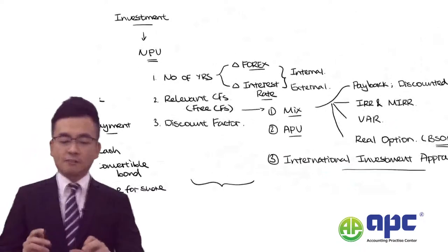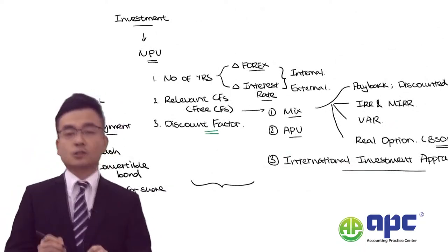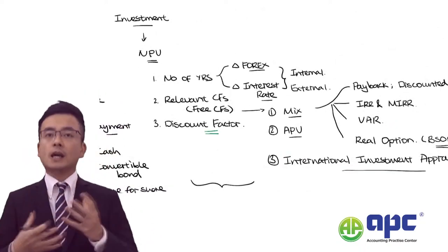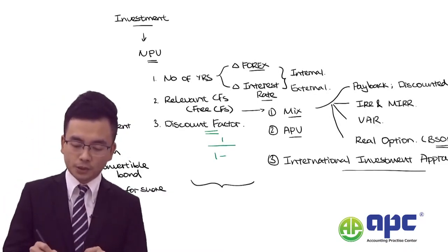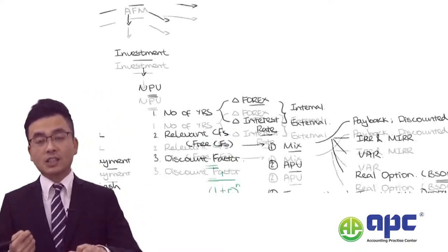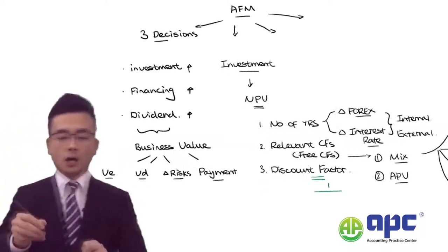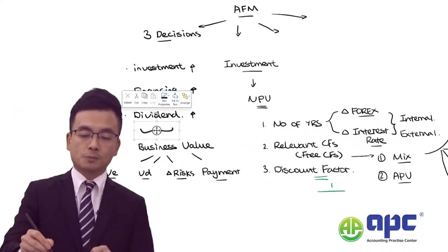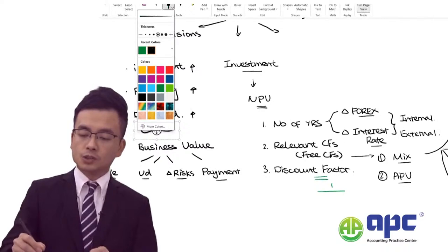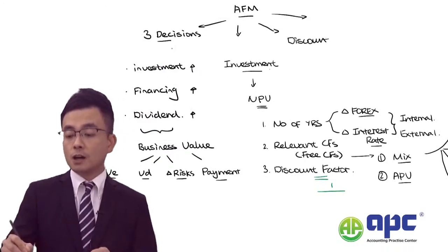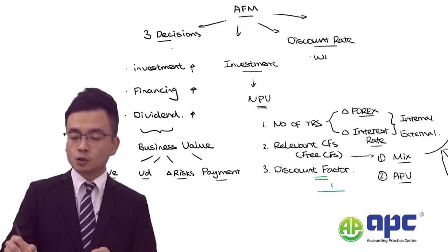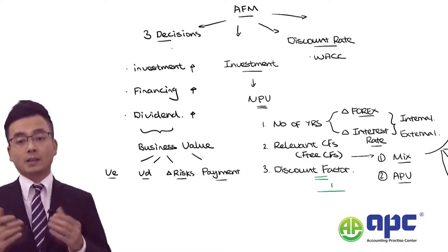The discount factor is 1 divided by (1 plus the discount rate) to the power of n. The third part of the syllabus from my perspective is the discount rate — you can refer to this as the weighted average cost of capital, or WACC for short.